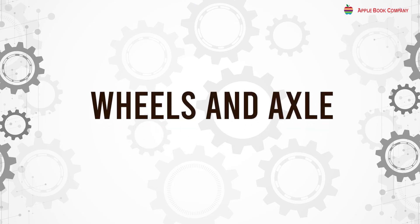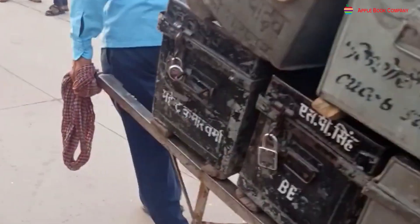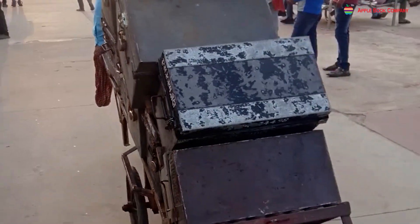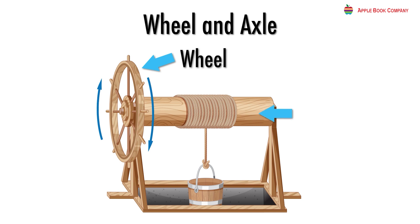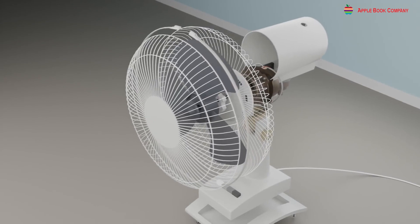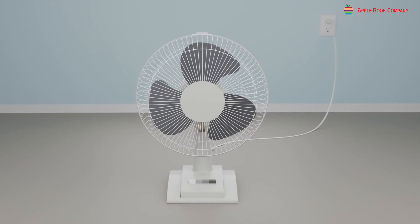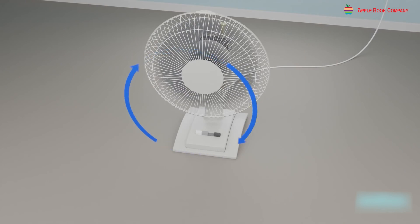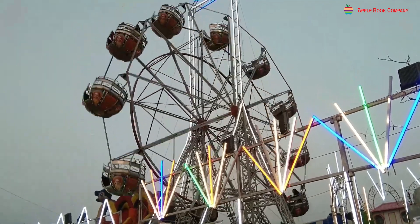Wheel and axle. The wheel is considered one of the most important inventions. A porter at the station uses a cart to carry loads — the cart has wheels, making the work easier. Wheels are an example of a simple machine, supported by an axle. An axle is a rod or pole centered in the wheel that allows the wheel to turn around it. A fan is another example: the center portion is the wheel attached to a rod axle, and the blades are attached to the center. A merry-go-round and a chained wheel are also examples of wheel and axle.